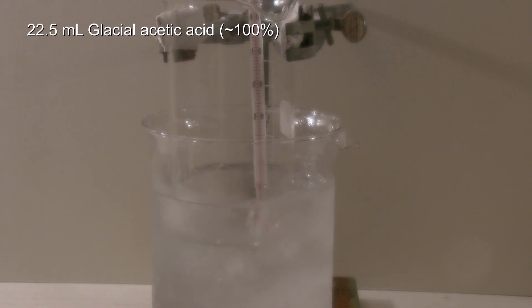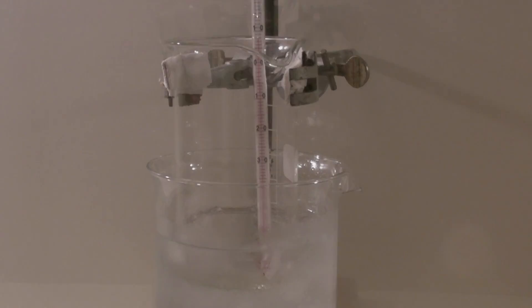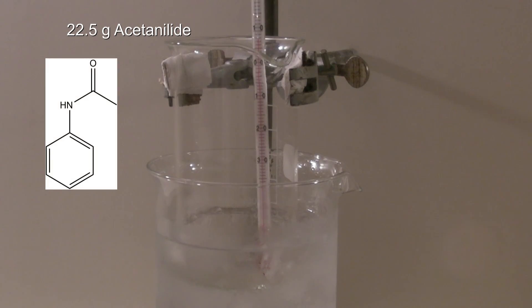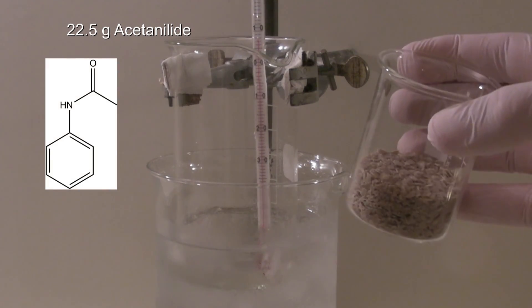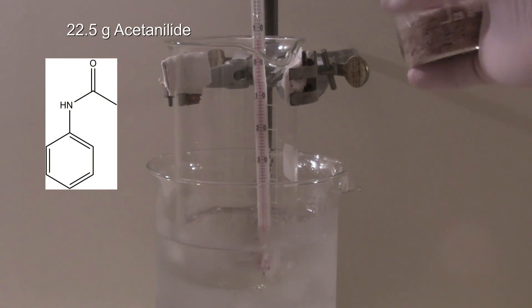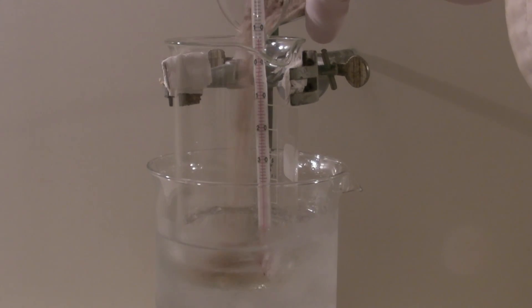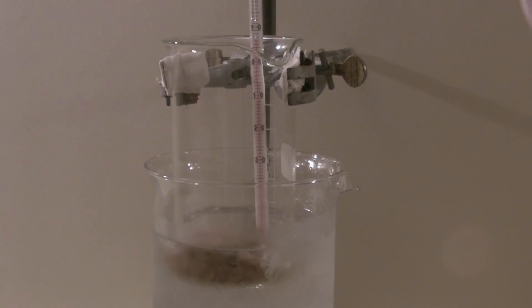Then 22.5 ml of glacial acetic acid are added to the beaker. To this 22.5 grams of acetanilide are added. Then it is mixed a bit with a glass rod.